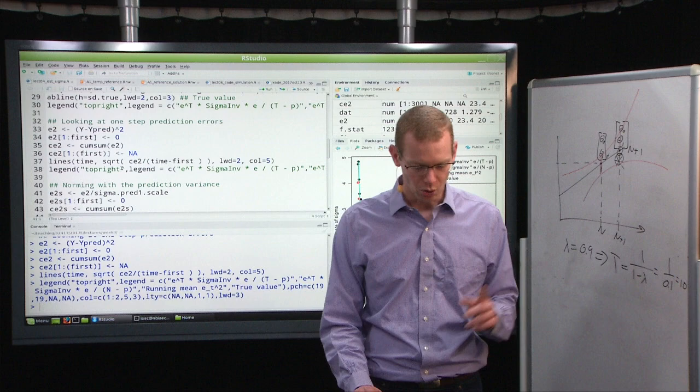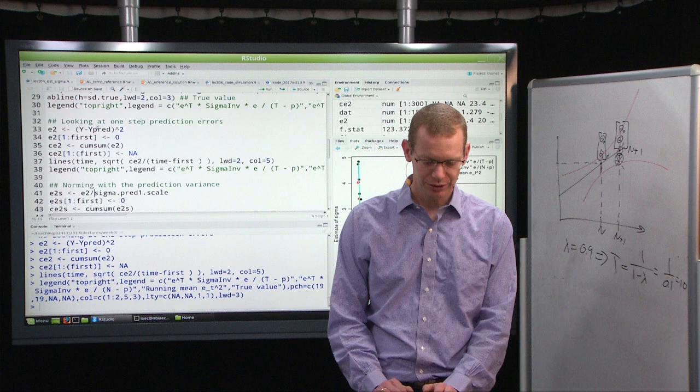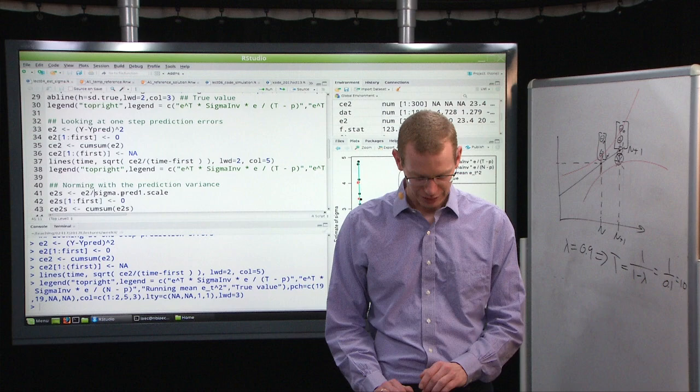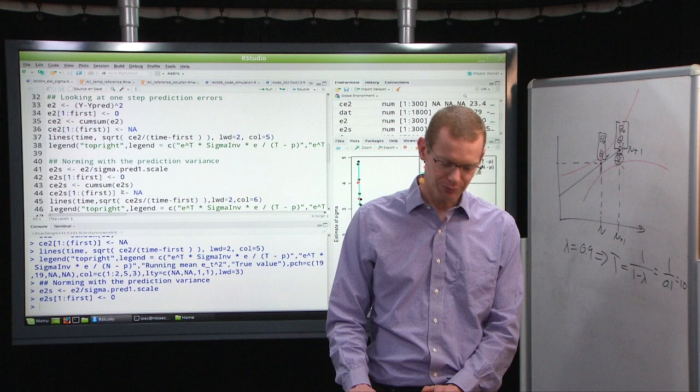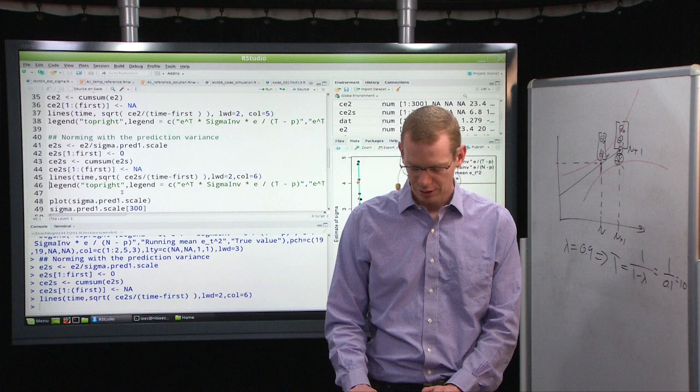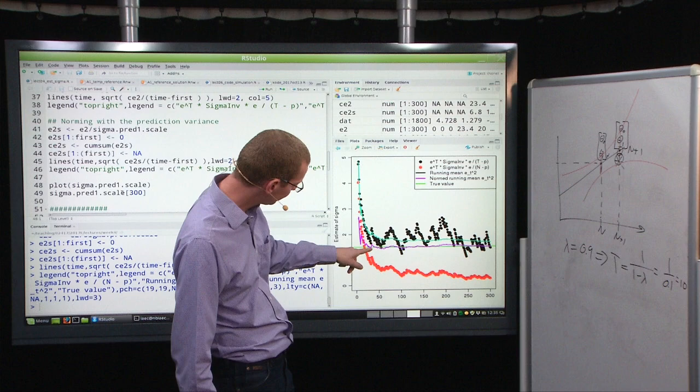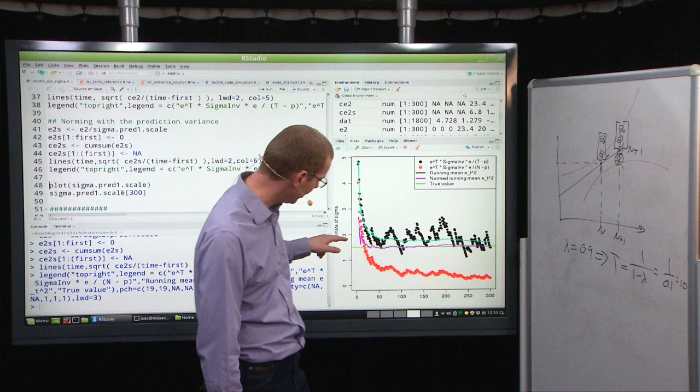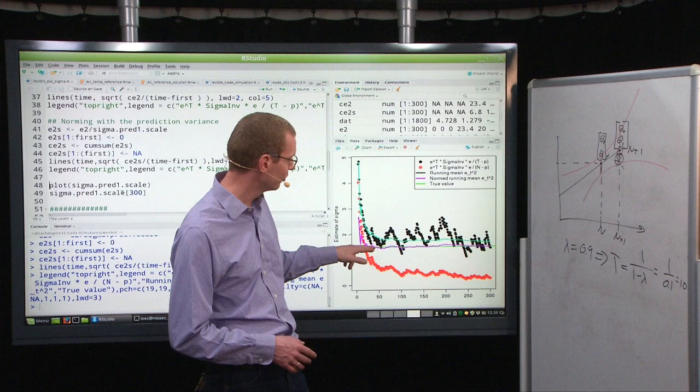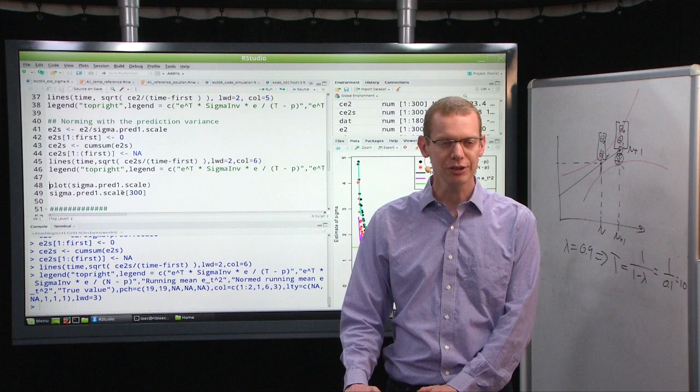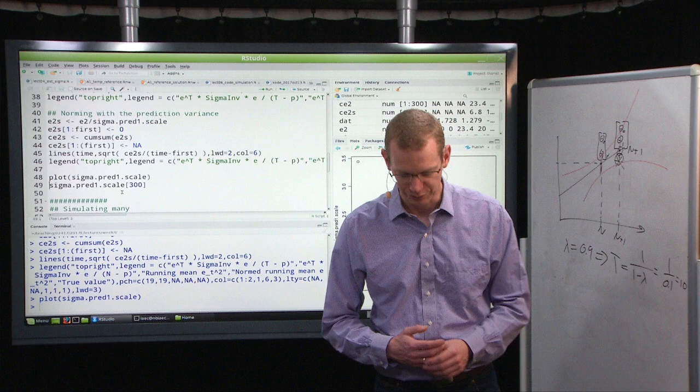Now, if we do almost the same as before, but we just normalize all the one-step prediction errors that we have up here, we normalize those by the scale, the prediction scale that we just discussed, and do the same way of getting around the first initial point, then we get an estimator for the Magenta line. Again, let me add the legend updated. So we have a normed running mean value. We see that even after around 30 observations, it's very, very close to the true value, and it remains very close to the true value. So that is, you can see, the motivation for using this normed running mean value.